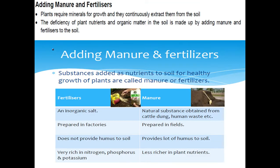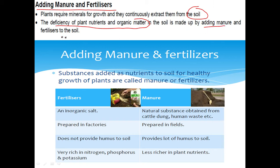Today we will be discussing the third step, that is the addition of manure and fertilizers. We all know that plants require minerals and other sources for proper and healthy growth, so they extract these from the soil. Due to this, there will be a deficiency of plant nutrients and organic matter present in the soil. That is why manure and fertilizers are added externally to the soil. Let's discuss the difference between manure and fertilizer.